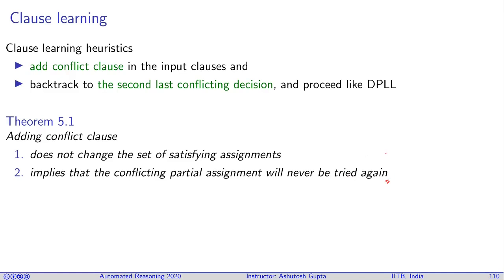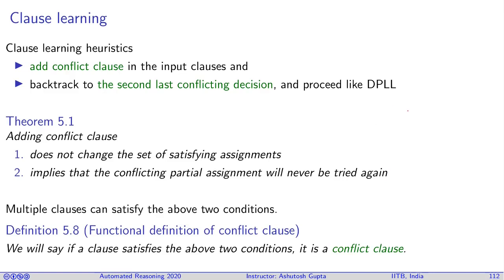These two facts together make a very important, compelling reason why you should go and add this conflict clause in your set of input clauses. Multiple clauses can satisfy the above two conditions. And what we can do is we can define these properties as the definition itself. So we first gave a definition which is coming from the implication graph. However, this itself implies this property, and we can later turn this into the definition itself. It's up to our choice. And this definition is more functional.